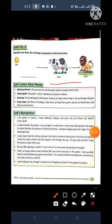Number 1. Number 1 is photosynthesis. What is photosynthesis? The process by which green plants prepare their own food. That is called photosynthesis.